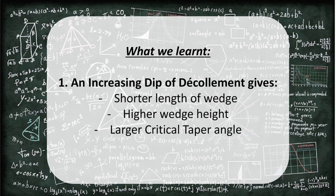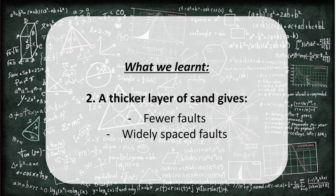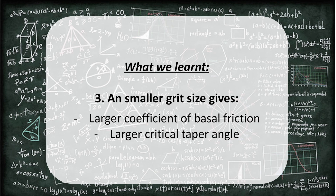In summary, we learnt that: firstly, an increasing dip of the décollement gives a shorter wedge length, a higher wedge height, and a larger critical taper angle. Secondly, a thicker layer of sand produces fewer faults that are more widely spaced. Lastly, a smaller grid size gives a larger coefficient of basal friction as well as a larger critical taper.